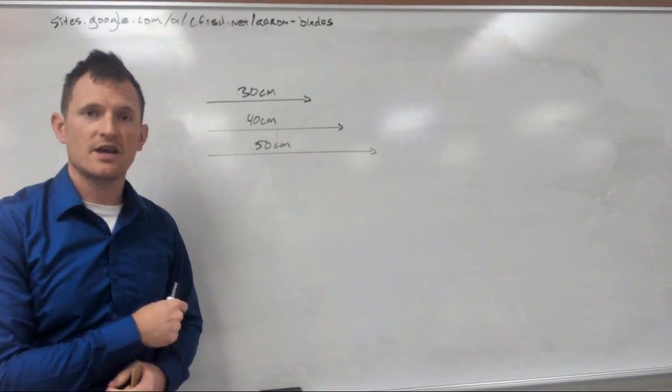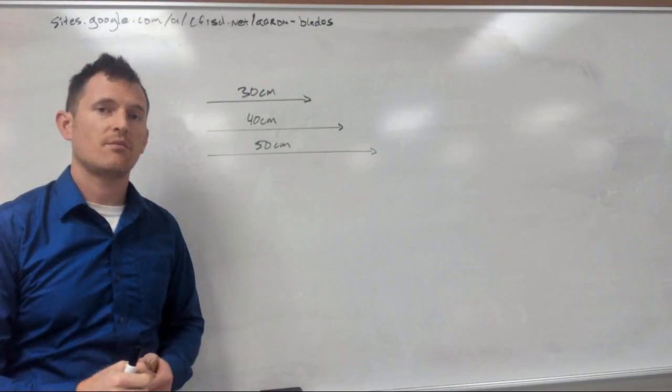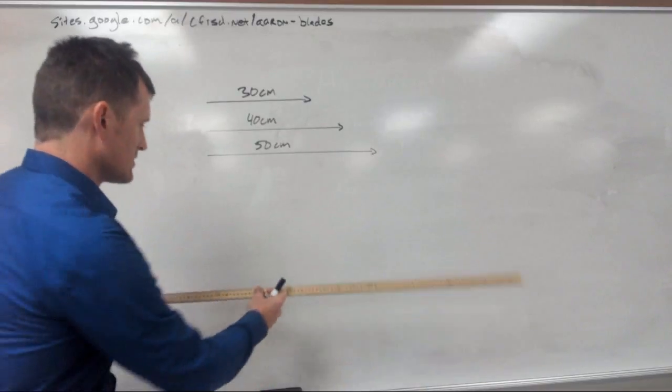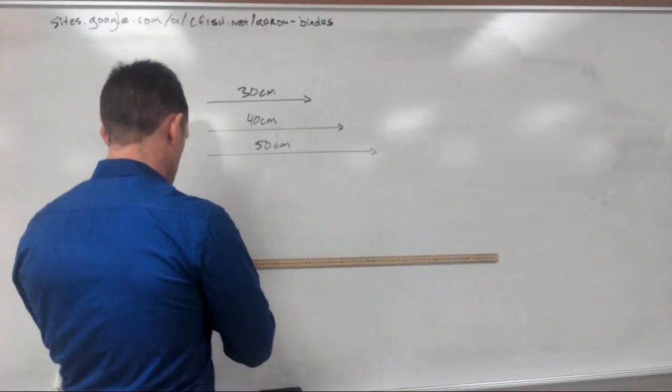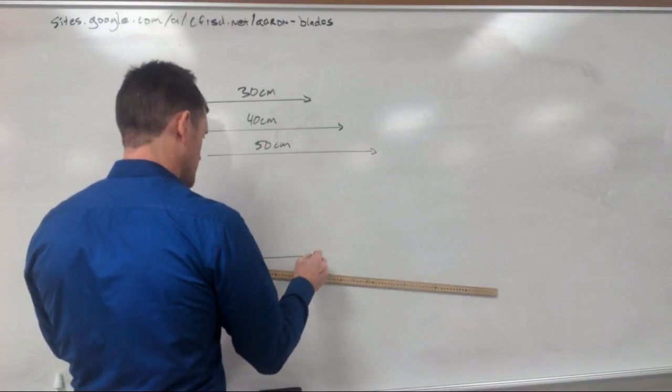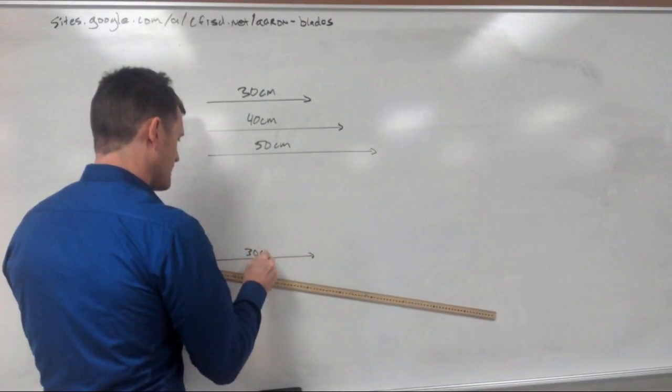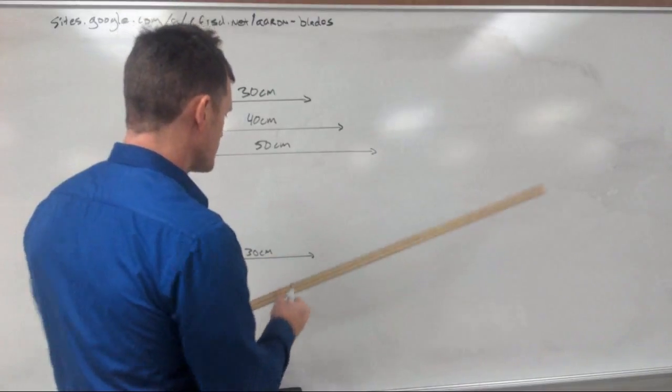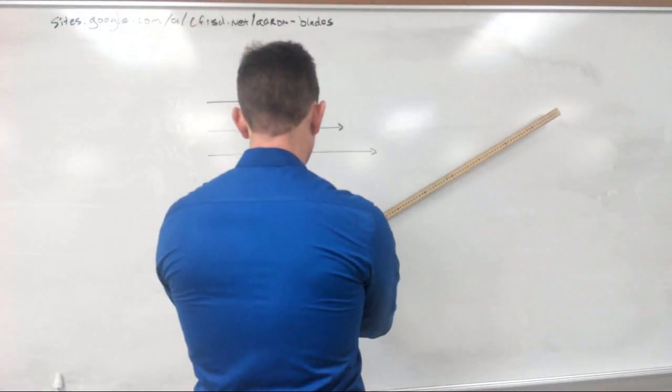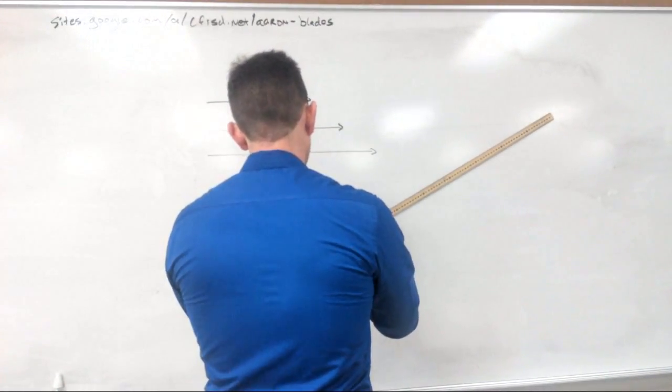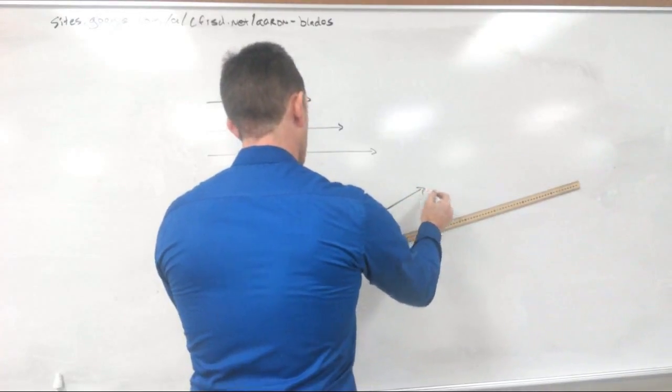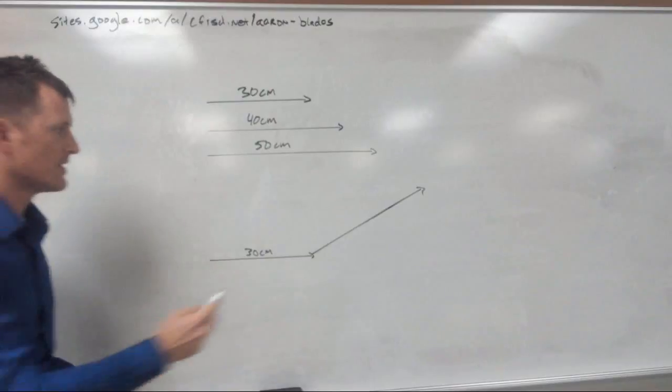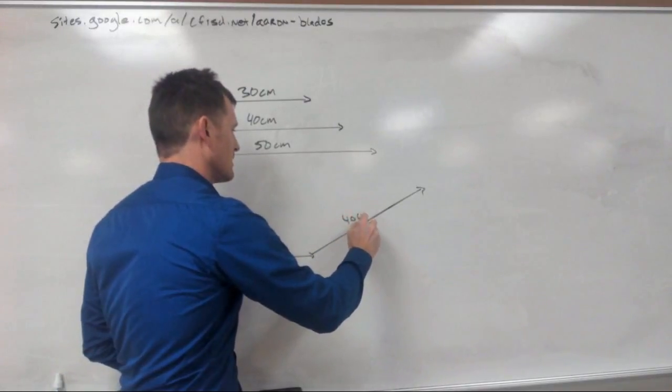In order to add these vectors together, what we're going to do is we're going to draw them head to tail. So let's start off by drawing a 30-centimeter vector, like so, 30 centimeters. And now we're going to add it to our 40-centimeter vector by drawing a 40-centimeter vector on the nose of it, right there. See, 40 centimeters.